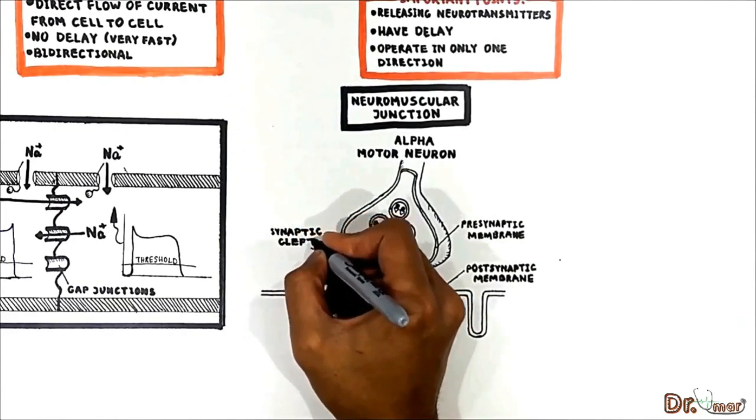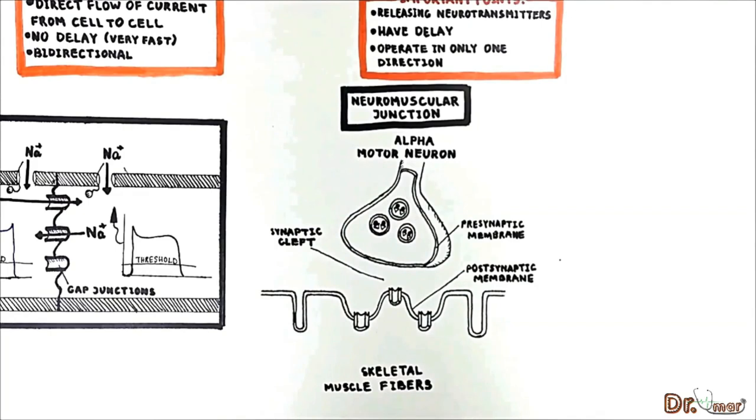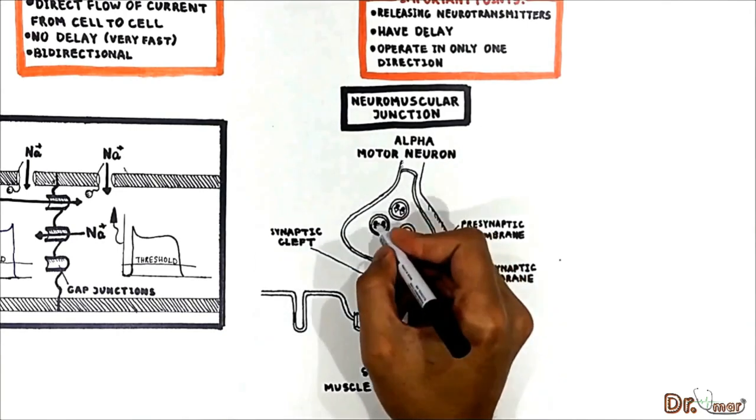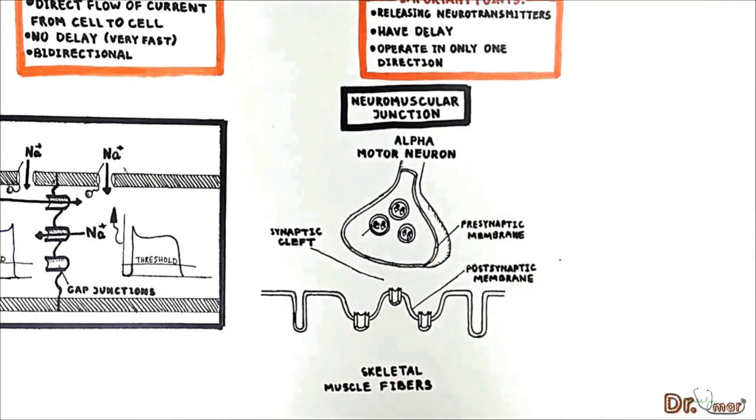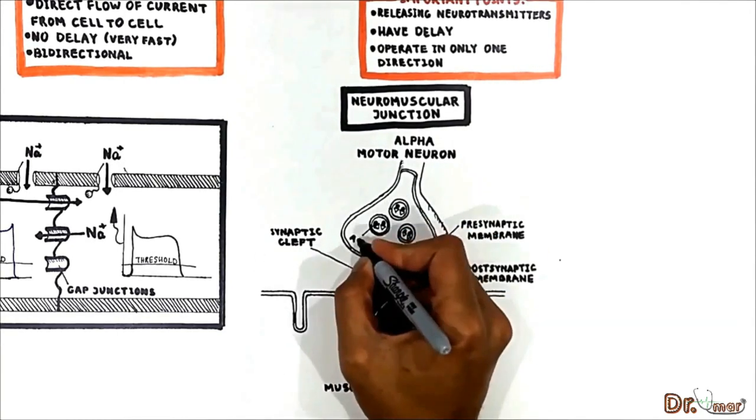Because in a chemical synapse the information transmits via neurotransmitters in a pre-synaptic terminal at a neuromuscular junction we have many vesicles that contain a neurotransmitter called acetylcholine.